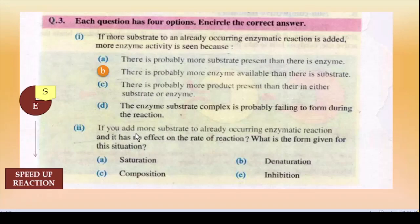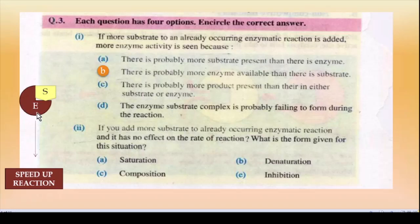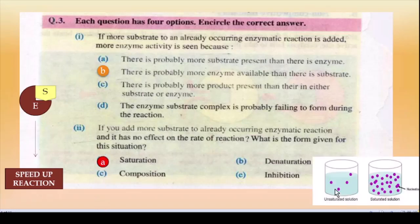MCQ 2 — If you add more substrate to an already occurring enzymatic reaction and it has no effect on the rate of reaction, what is the term for this situation? Yeh wahi condition hai jisme substrate add karne ke baawajood reaction ki speed nahi badh rahi. Kyunki enzyme substrate ke saath milkar enzyme-substrate complex banata hai, lekin jab enzyme available hi nahi hai, toh reaction speed up nahi ho sakta. Aisi condition jisme substrate add karne ke baawajood reaction speed up nahi ho raha — enzyme is saturated. Saturated ka matlab hai bhara hua; unsaturated iska opposite hai.